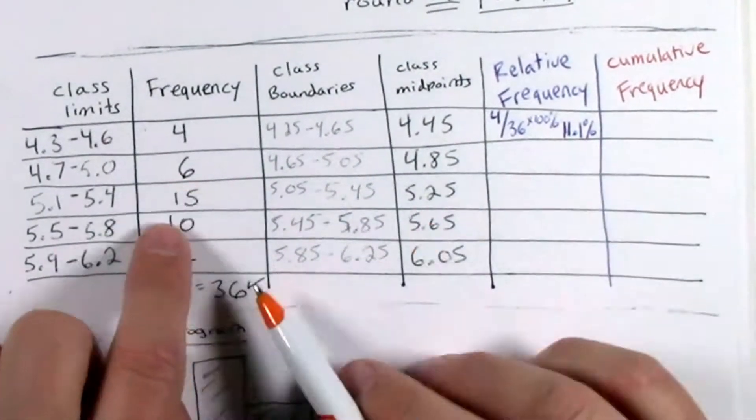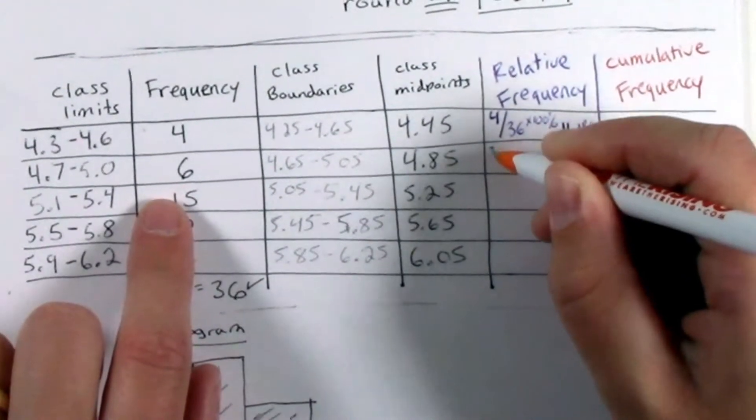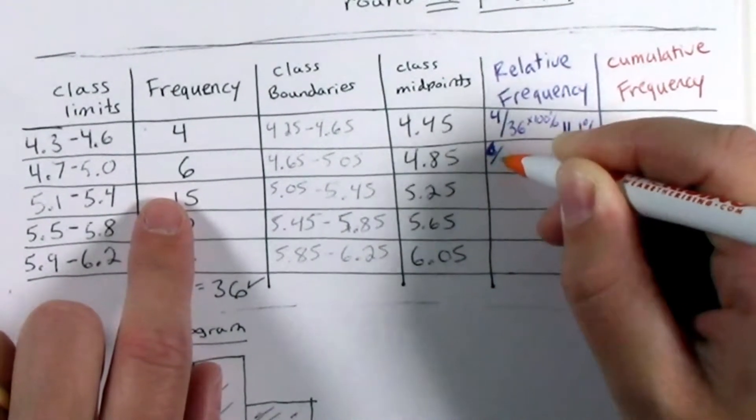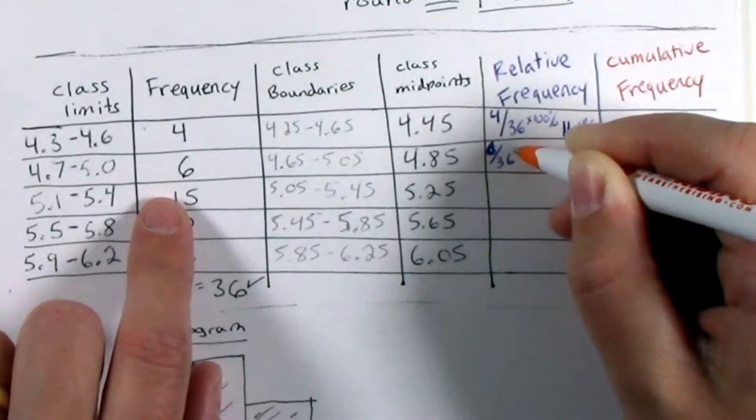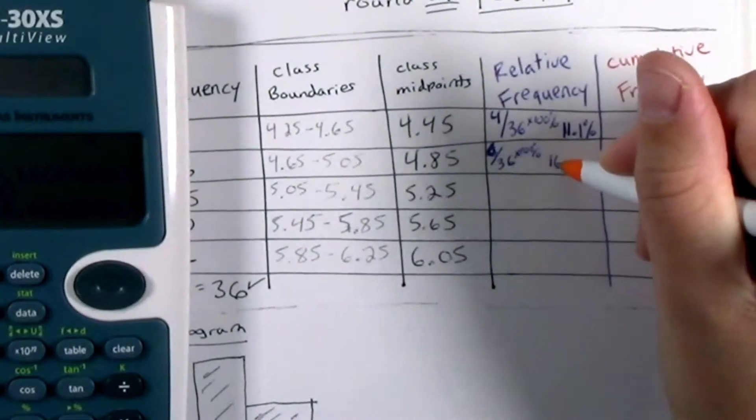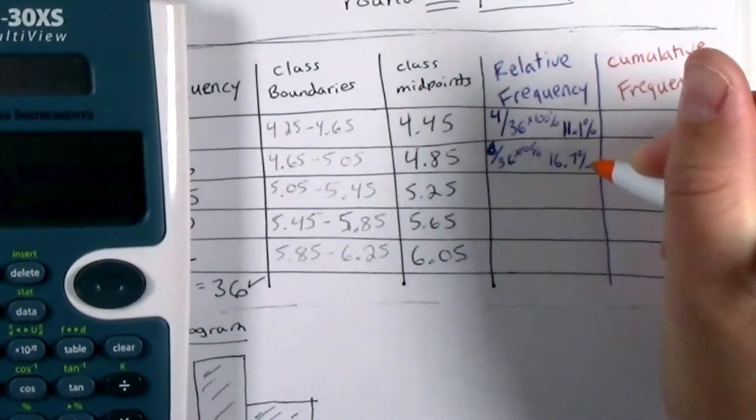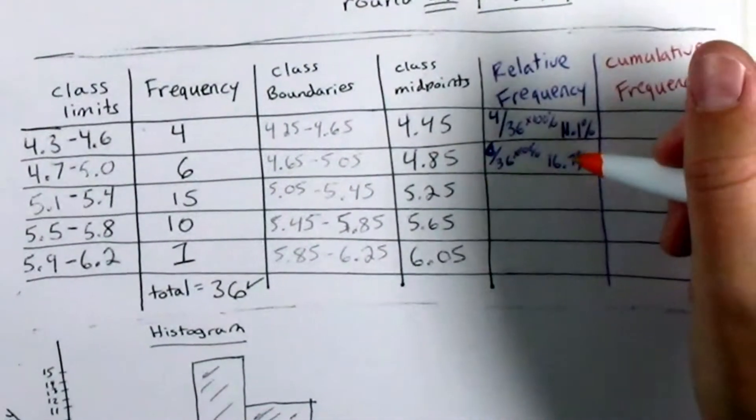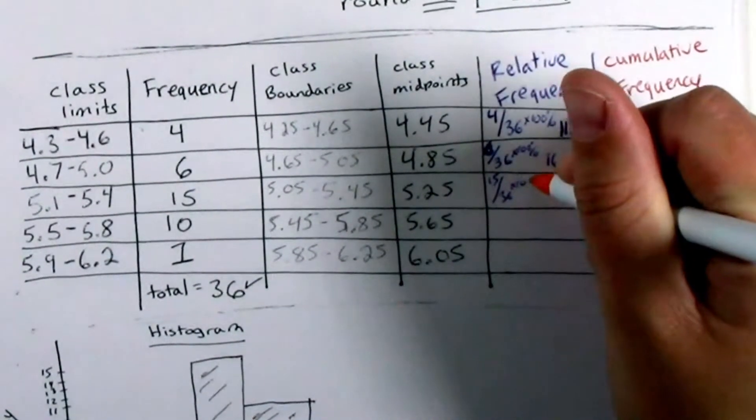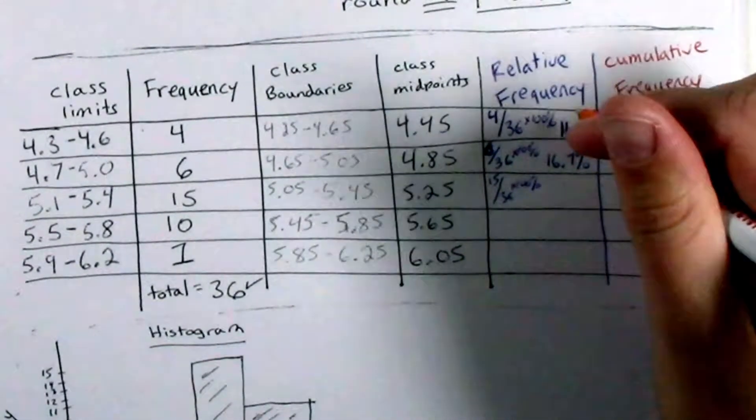Okay, so for the next class, I'll just take 6 out of 36, right? 6 relative to the total of 36 observations. There were 6 observations between 4.7 and 5.0. Now, multiply that by 100%, and I get 16.7%. And I can continue like this for the next three classes.